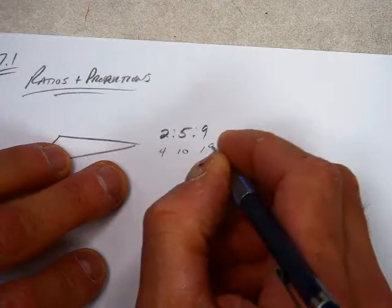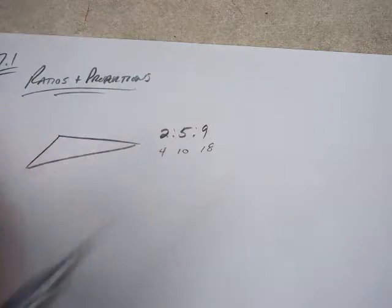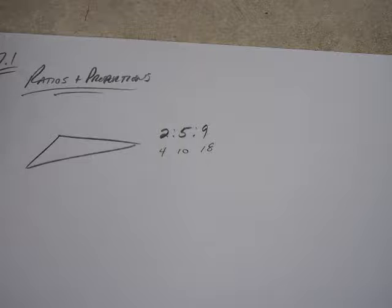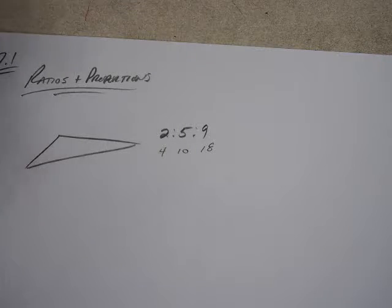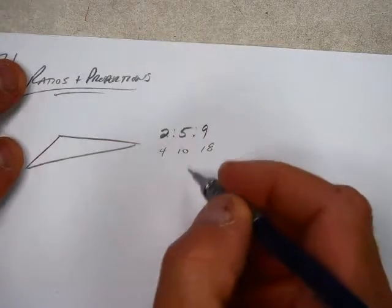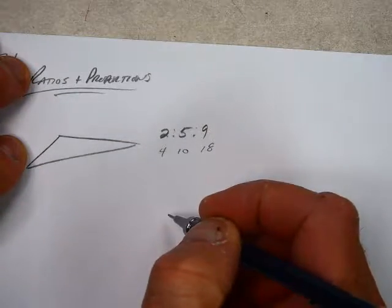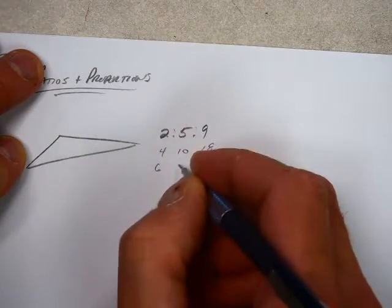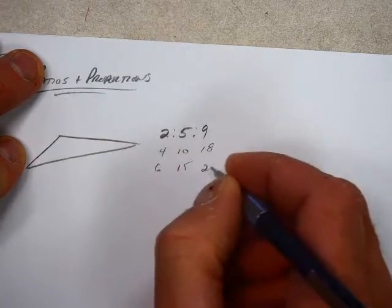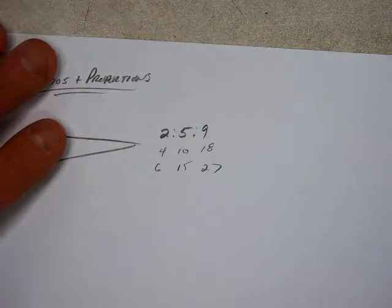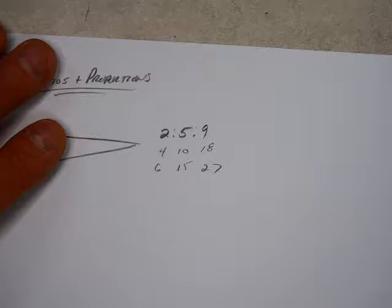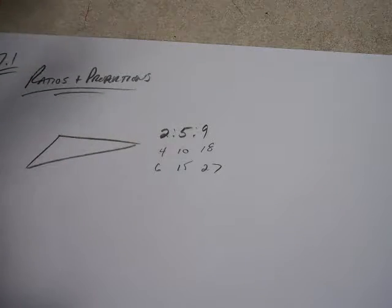4, 10, and 18, are those three in the 2 to 5 to 9 ratio? Yeah, they are. But do they add up to 180 degrees? No. So it would be a pain to list all the possibilities. 6, multiplying by 3 now, 15, 27, that doesn't add up to 180. But how could I express each one of these angles?